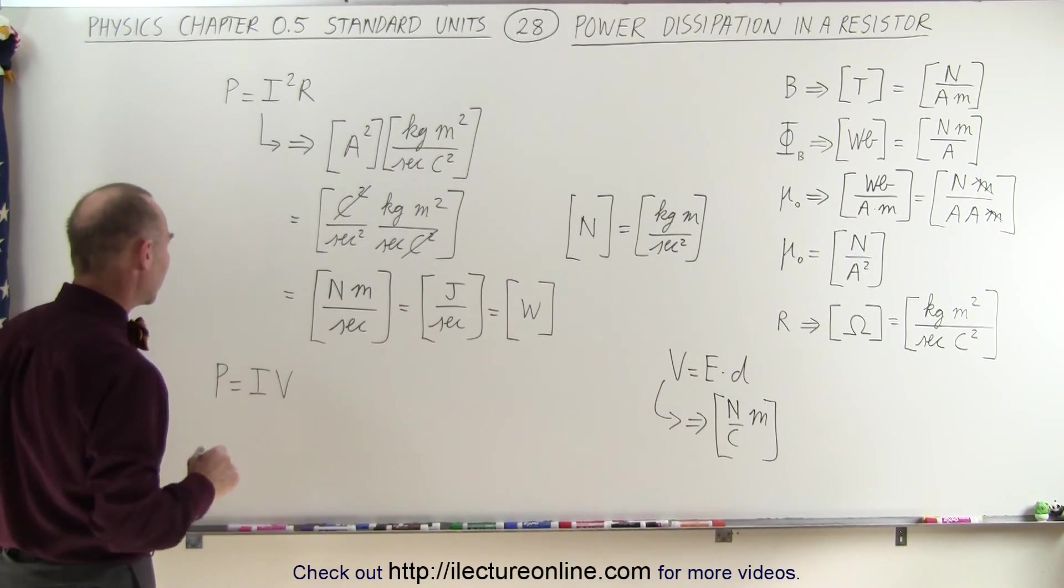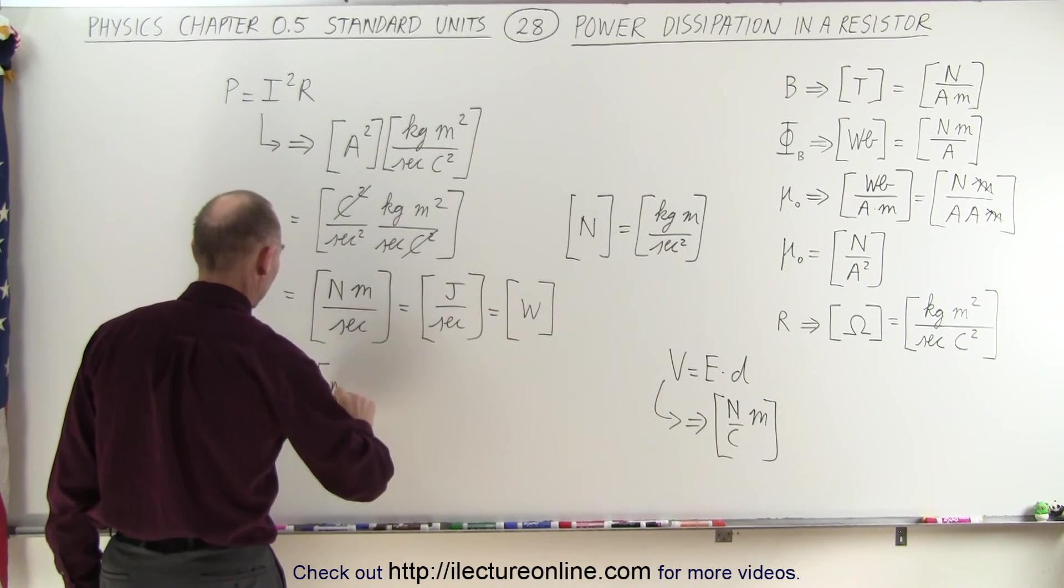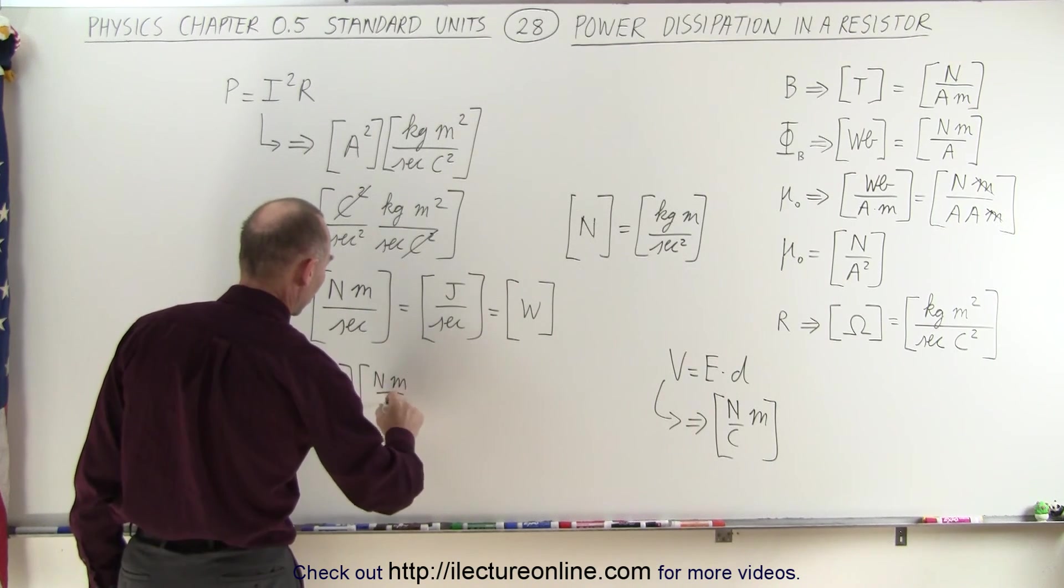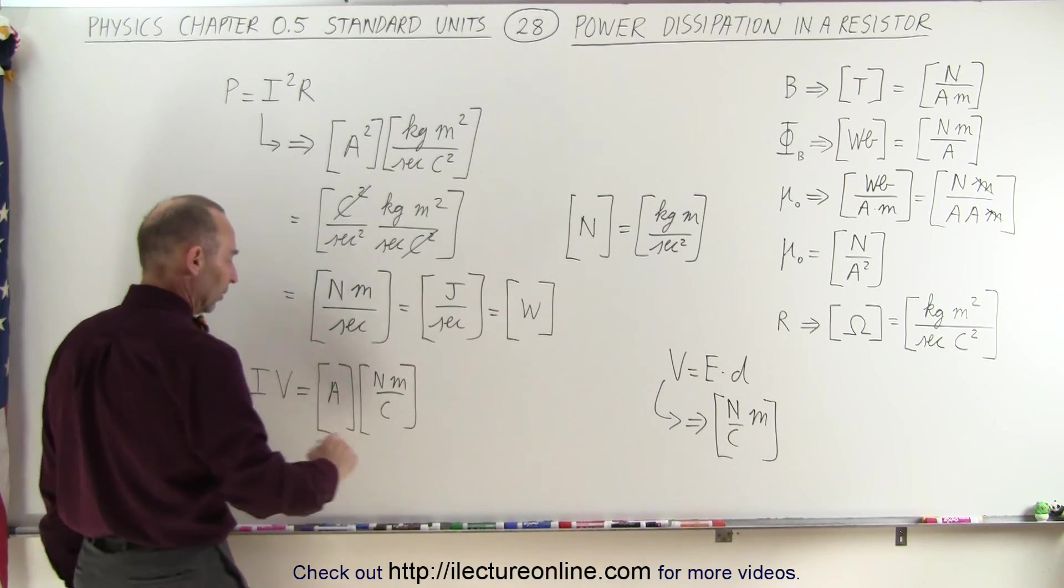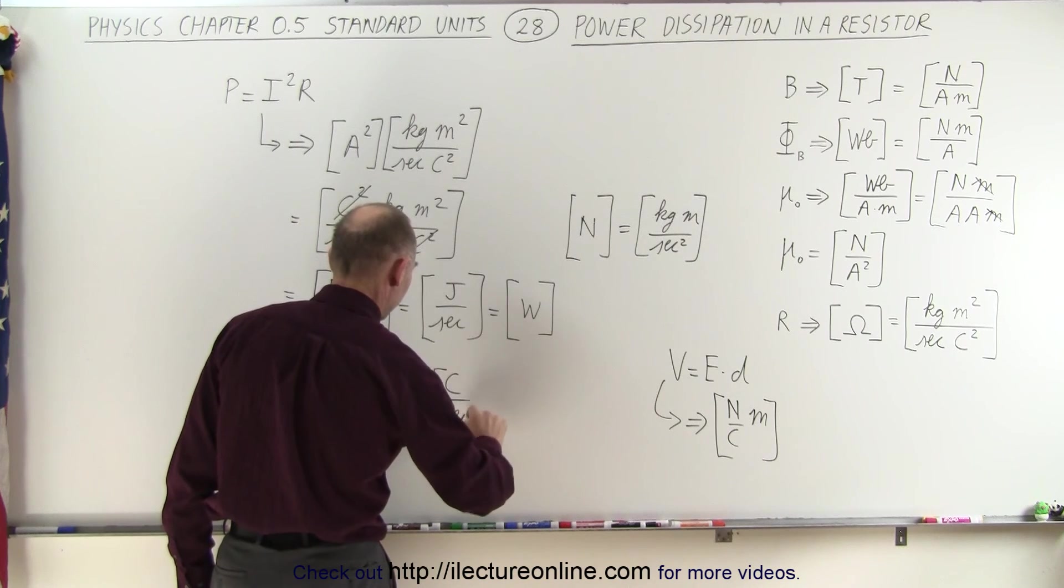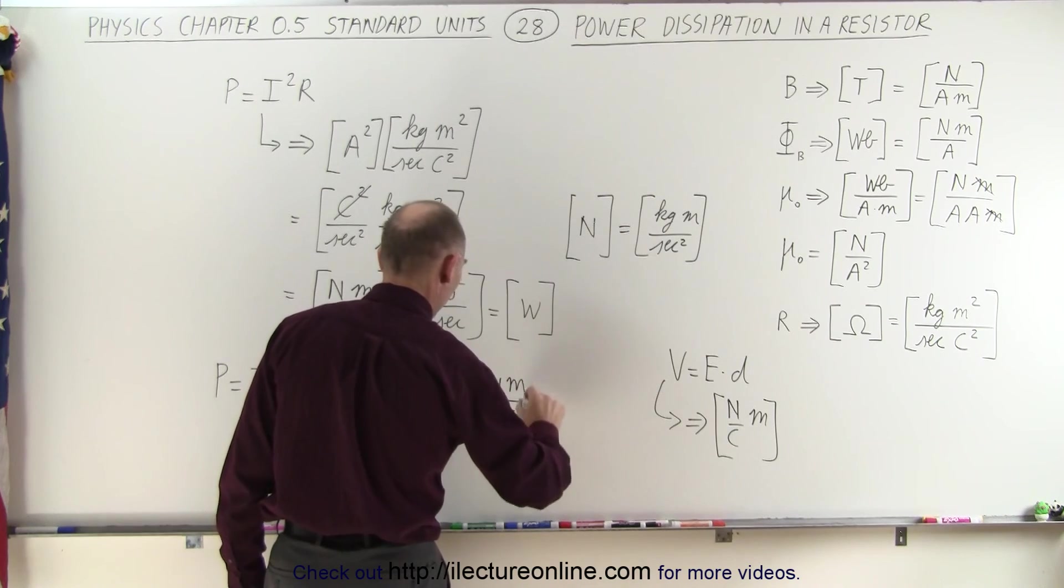We can go ahead and plug that in here and see what we get. So the unit for current is amps, and the unit for voltage now we realize is going to be newton meters per coulomb. Now, amp can be written as coulombs per second, so this is equal to coulombs per second times newton meters per coulomb.